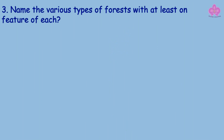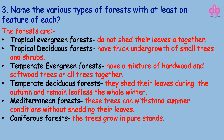Question: Name the various types of forests with at least one feature of each. Answer: Tropical evergreen forests — do not shed their leaves altogether. Tropical deciduous forests — have thick undergrowth of small trees and shrubs. Temperate evergreen forests — have a mixture of hardwood and softwood trees. Temperate deciduous forests — shed their leaves during autumn and remain leafless the whole winter. Mediterranean forests — these trees can withstand summer conditions without shedding their leaves. Coniferous forests — the trees grow in pure stands.